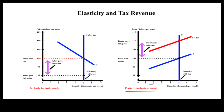When demand is perfectly inelastic, the quantity demanded is not affected by price, and the per-unit sales tax generates the maximum amount of tax revenue. The area within this rectangle represents total tax revenue, and the tax falls completely on consumers. That explains why sin taxes are so popular — because the demand for sins is fairly inelastic, and it is politically correct to make sinners pay. Cigarettes and alcohol are well-known targets for sin taxes. But not all goods with inelastic demand are sin goods — life-saving drugs have fairly inelastic demand but are not generally considered sin goods.